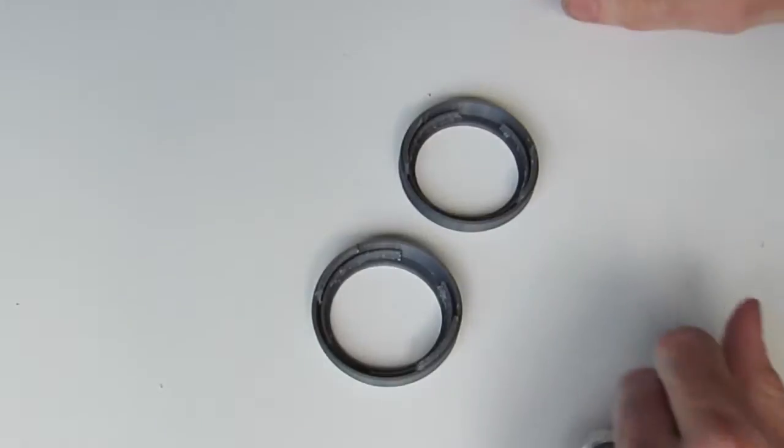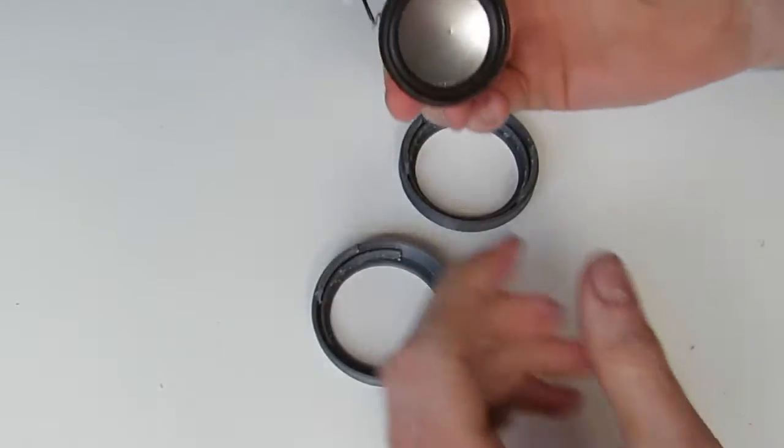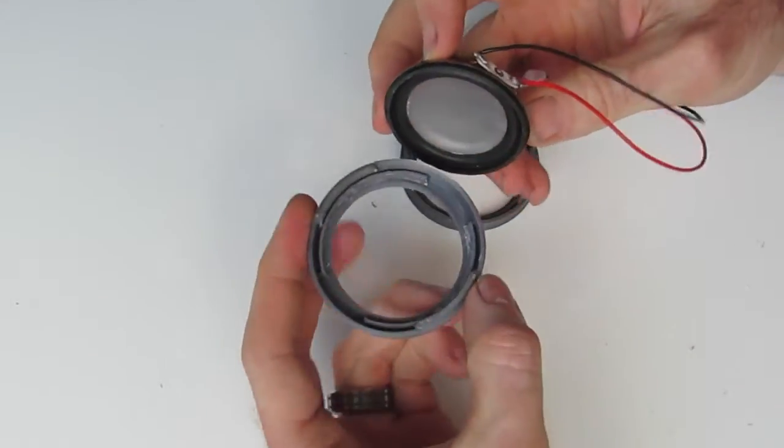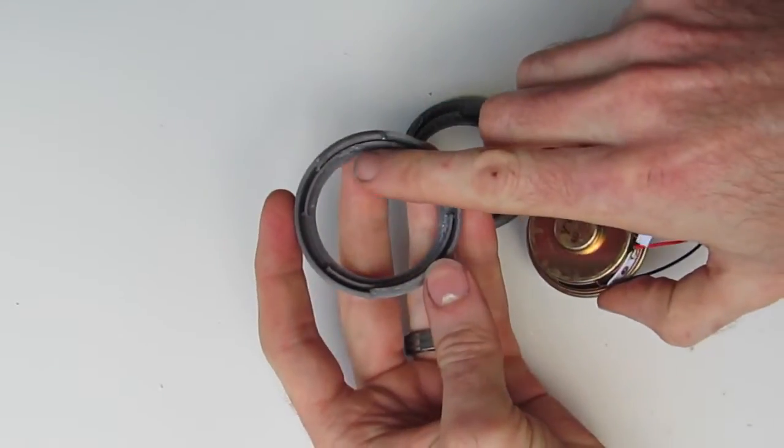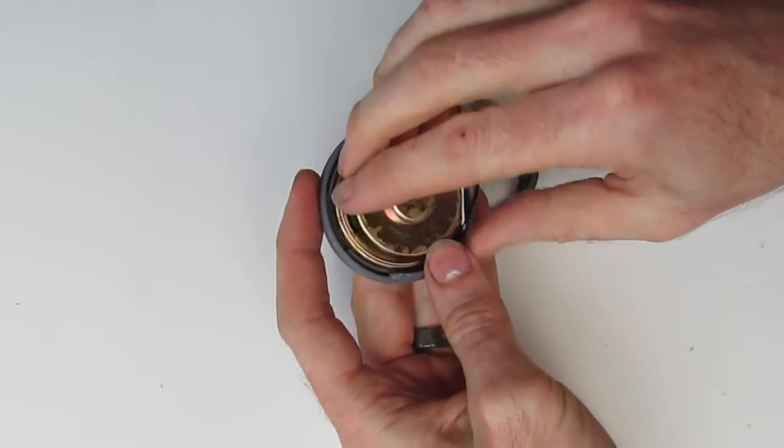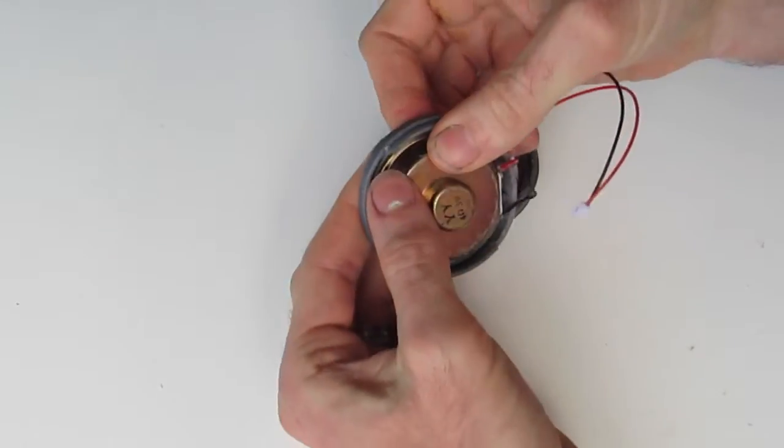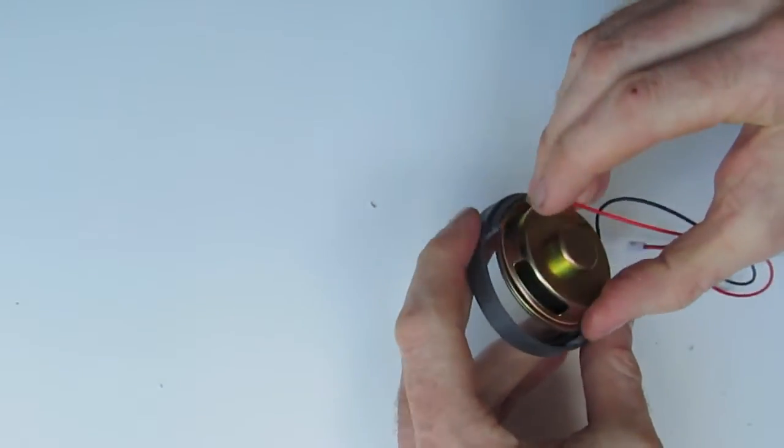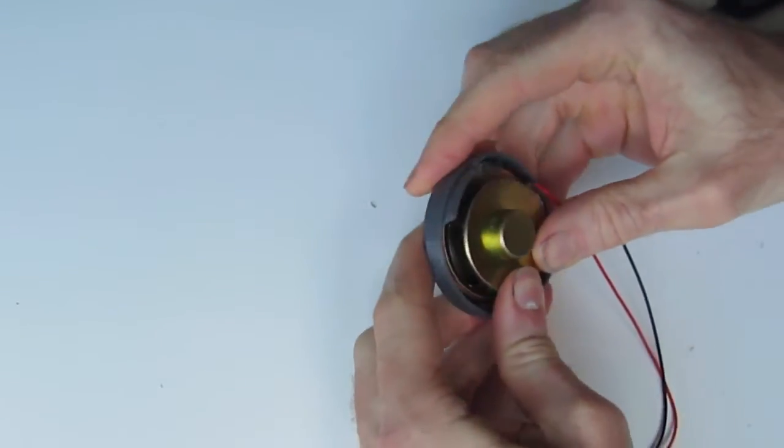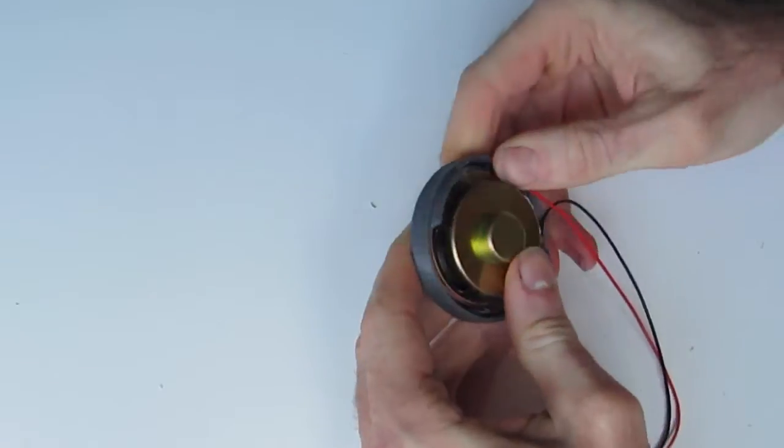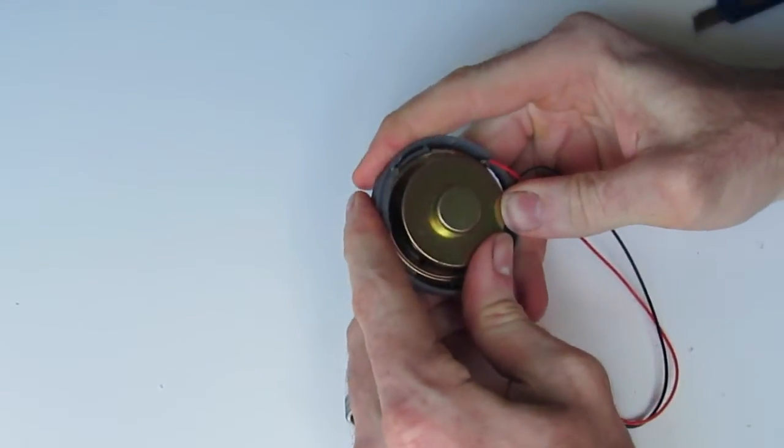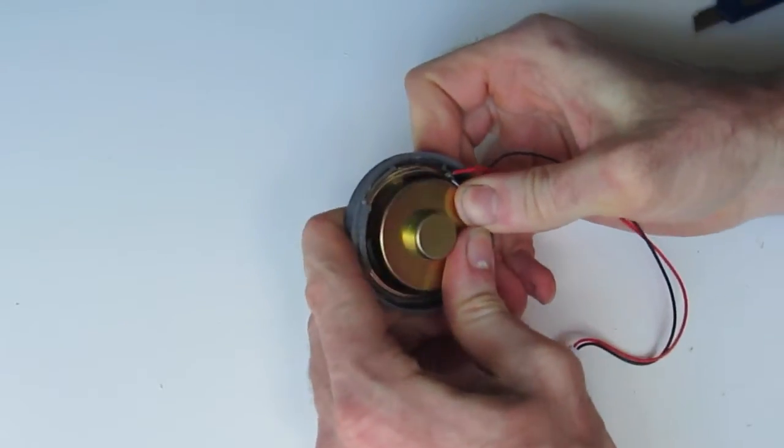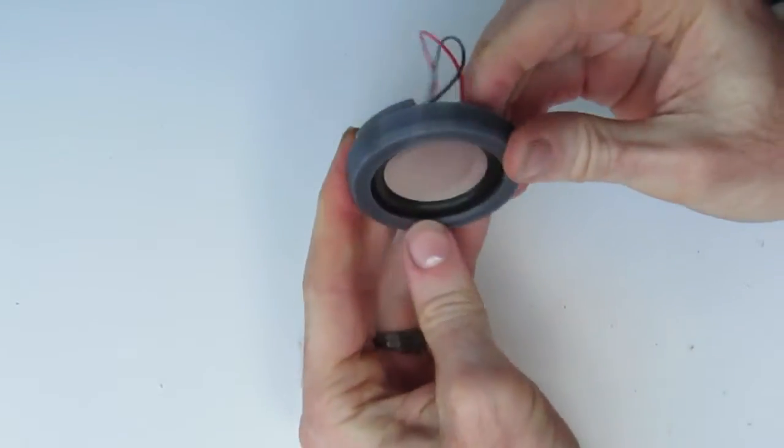So the first thing we want to do is start assembling our components together. So just grab your two little speaker end pieces here. Take your already prepared speaker, the wires connected. And this just gently clips in. There's little clips on each side here. So just place that in and just gently press down. You'll hear the little clip as the speaker presses in like so. Likewise with the other speaker.